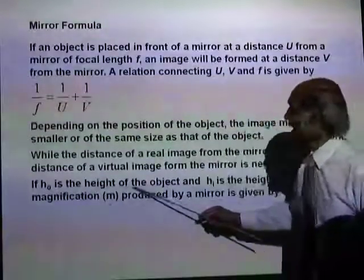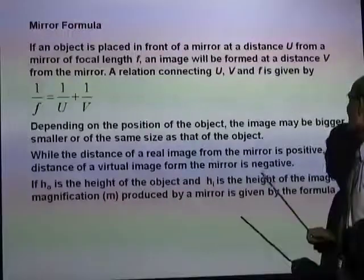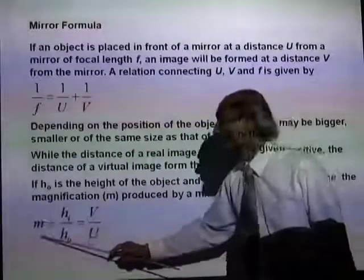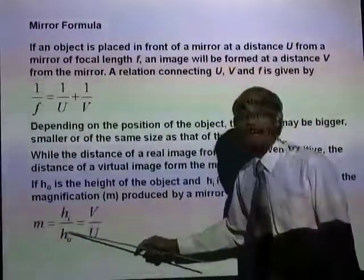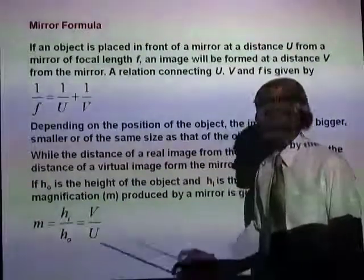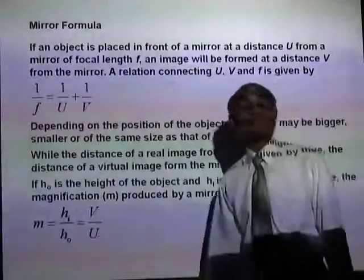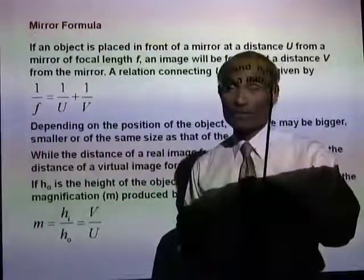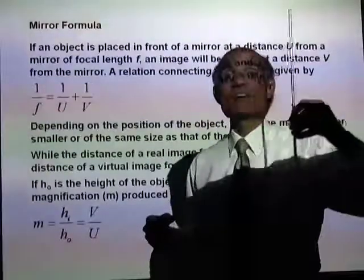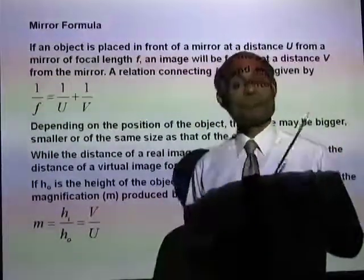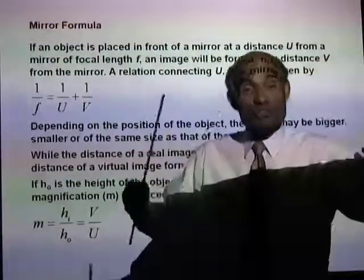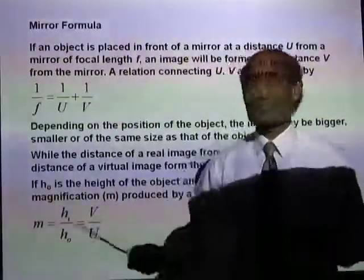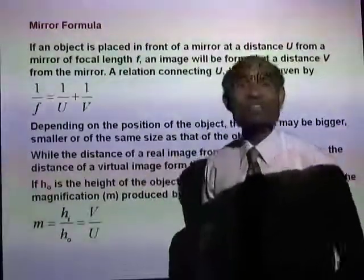If H_O is the height of the object and H_I is the height of the image, then the magnification produced by the mirror can be written as M equals H_I divided by H_O — the height of the image divided by the height of the object — and that will be the same as V divided by U, the image distance divided by the object distance. In the case of a plain mirror, this magnification is 1 because the size of the image and the size of the object are the same.